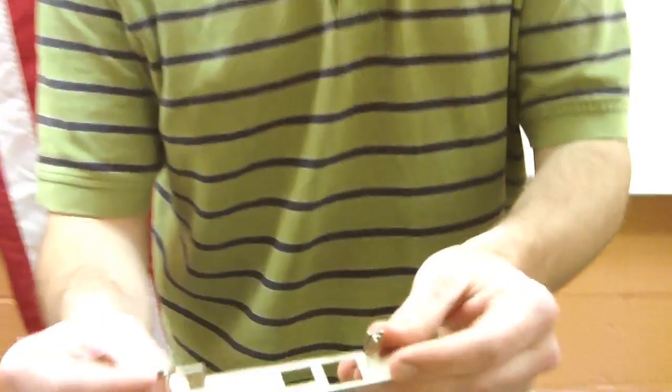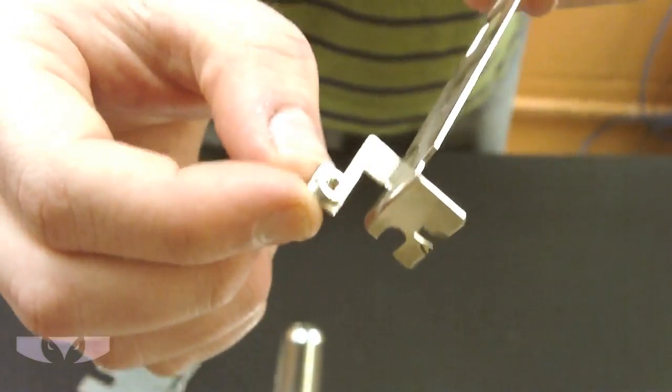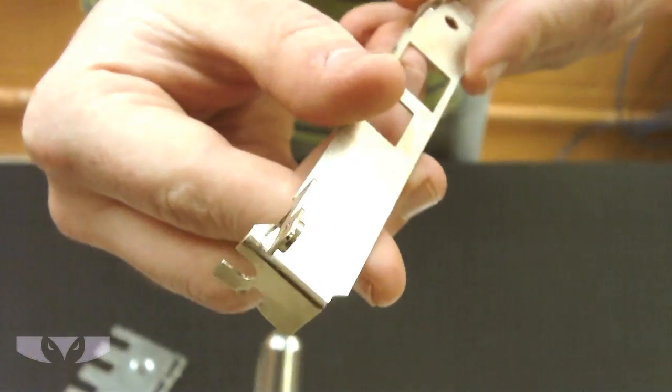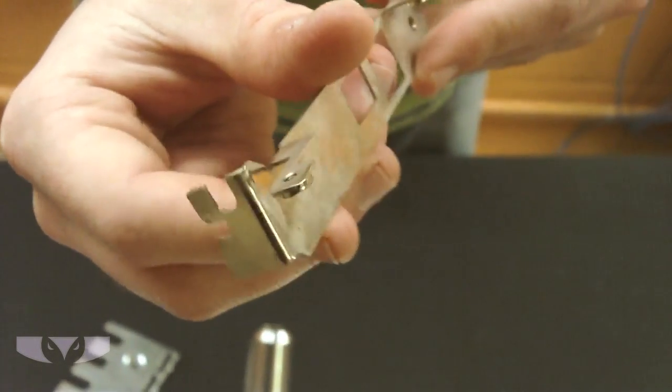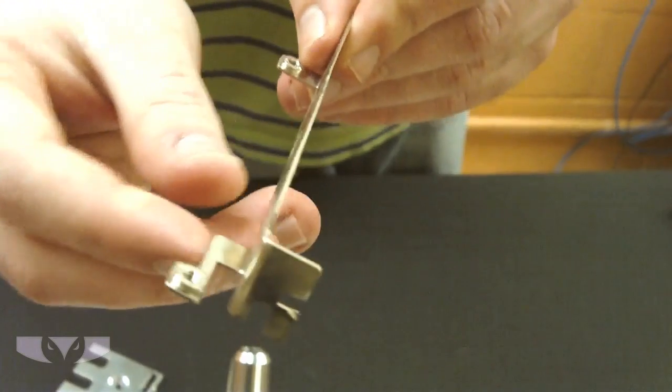So here is a PCI bracket. And as you can see, we've got some PEM nuts installed on there. Those are 440 size screws and you can see the threading in there.